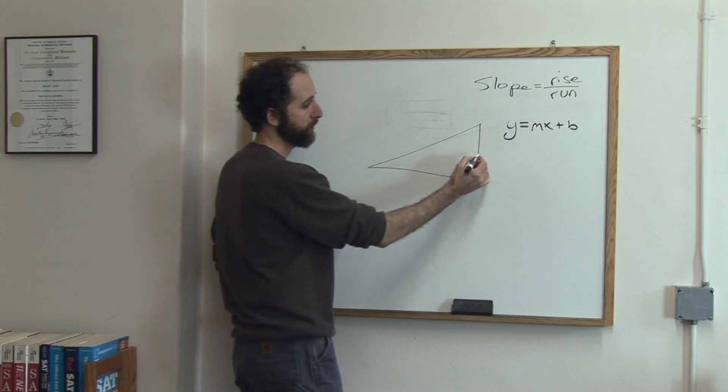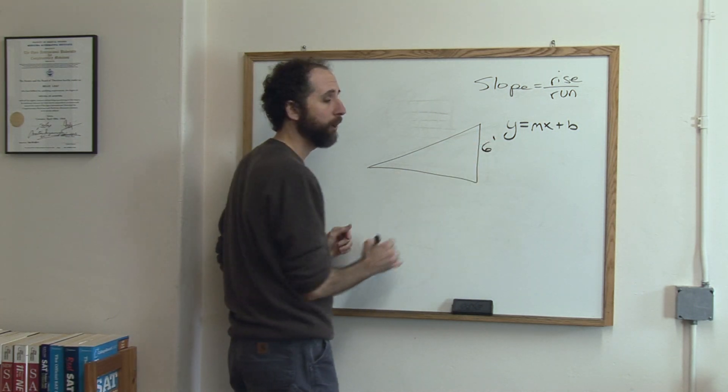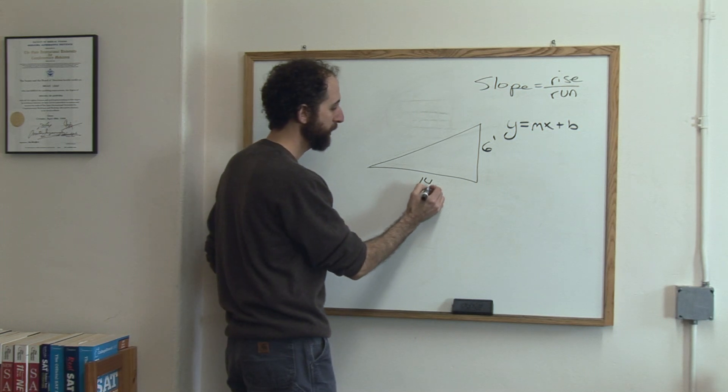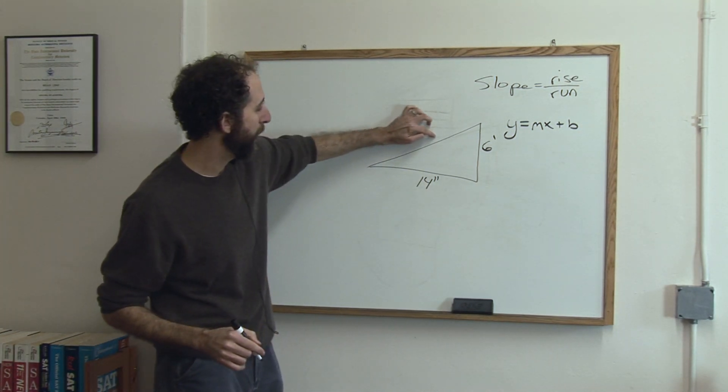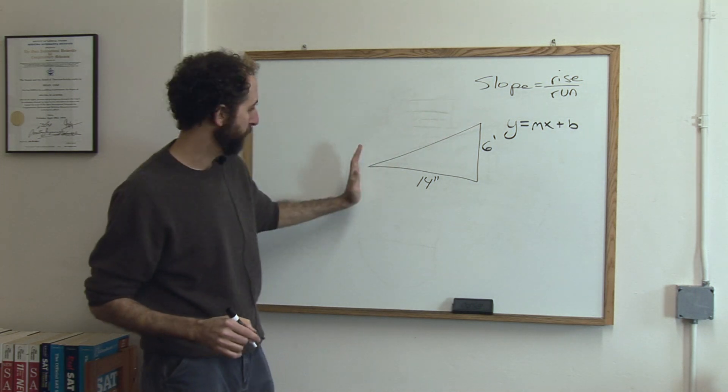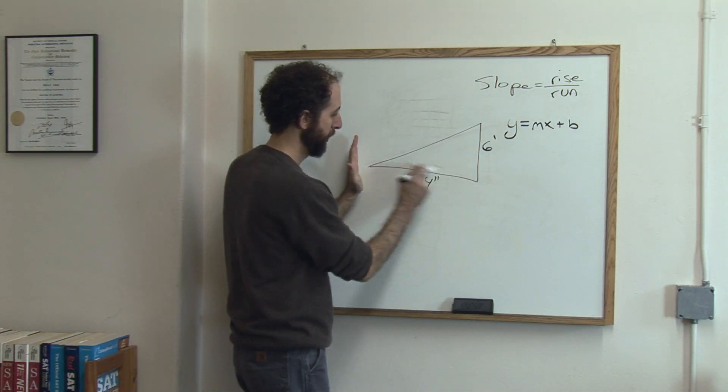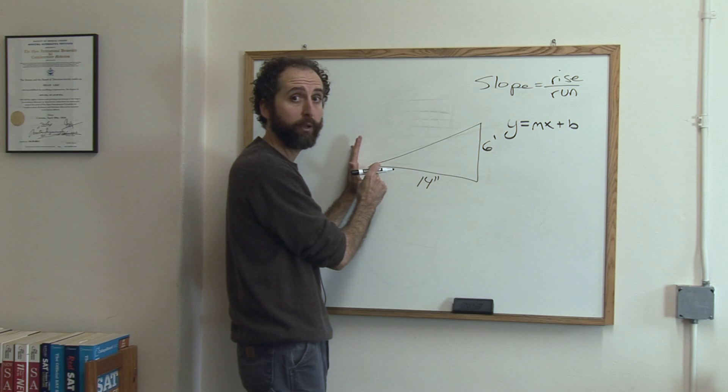So let's say on this ramp it was 6 feet tall, and let's say it was 14 feet long. And when we say 14 feet long, we don't mean the actual ramp if you measured with a tape measure, but from where it starts to where it ends, the distance is 14 feet here.